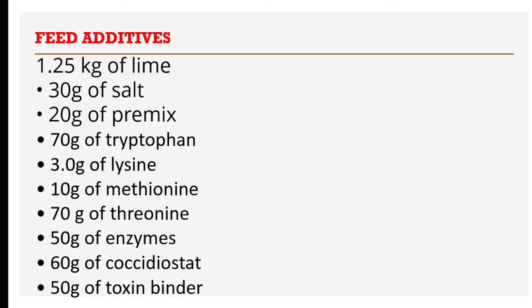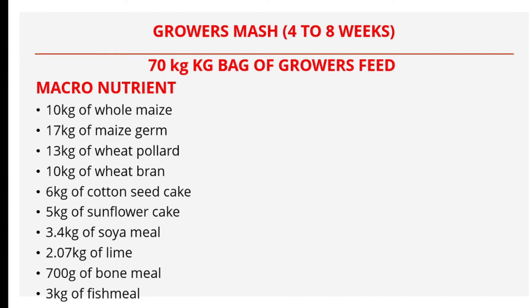Next, we look at grower mash for birds between four to eight weeks of age. At four weeks, you need to change from chick mash to grower mash. We are preparing a 70 kg bag of grower feed. The macronutrients include: 10 kg of whole maize, 17 kg of maize germ, 13 kg of wheat pollen, 10 kg of wheat bran, 6 kg of cotton seed cake, 5 kg of sunflower cake, 3.4 kg of soya meal, 2.07 kg of lime, 700 grams of bone meal, and 3 kg of fish meal.